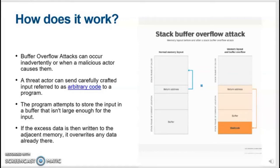Okay, so I'm going to talk about how the buffer overflow attack works. It is initiated by a malicious actor or a hacker. What the hacker does is that they send carefully crafted input, which is referred to as binary code, to a program. When the program receives this binary code input, it attempts to store it in a buffer that isn't large enough to contain the input. So if the excess data is then written to the adjacent memory, it overwrites any data that is already there.